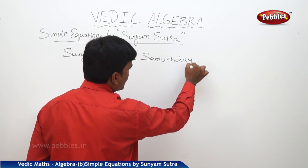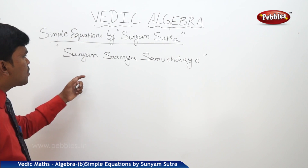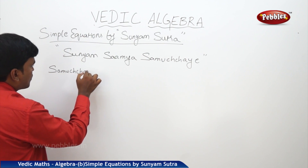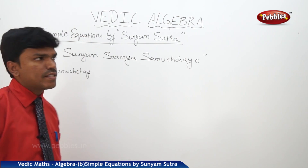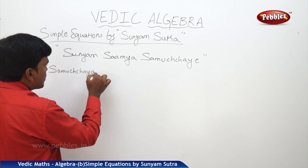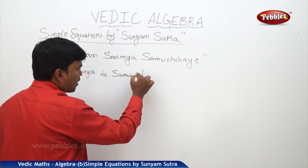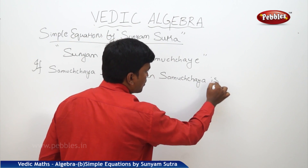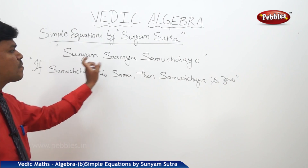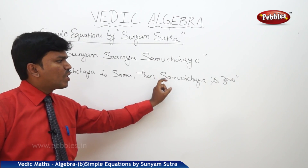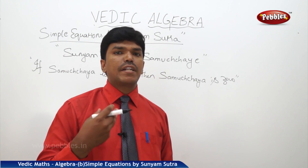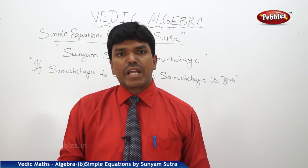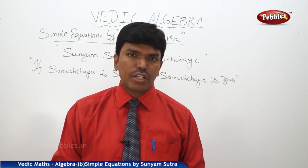Sunyam Samya Samuchaya — what is the actual meaning of this line? Sunyam Samya Samuchaya means: if Samuchaya is the same, then Samuchaya is zero. Samuchaya has different meanings in different contexts. We will first see the application of this Samuchaya Sutra by explaining the meaning of Samuchaya according to the context of the given equation.